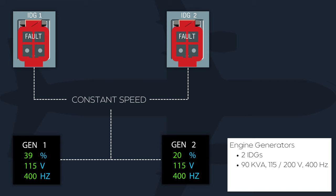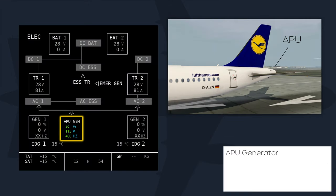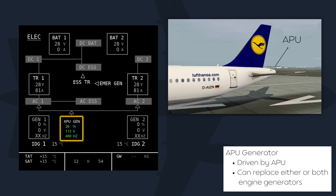The engine generators have priority over all other electrical sources and cannot be connected in parallel. A third generator driven directly by the APU, without an integrated drive, produces the same power as each engine-driven generator. The APU generator can replace either or both engine-driven generators at any time in flight or on the ground, and is normally used on the ground when ground power is not available and the engines are not running.